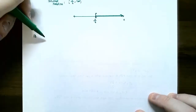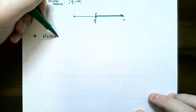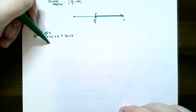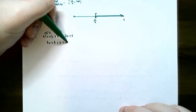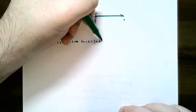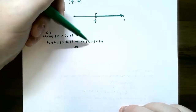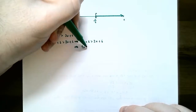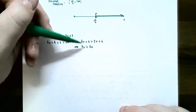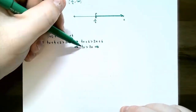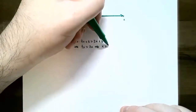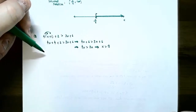Number three: 4(x + 1) + 2 > 3x + 6. Distribute to remove parentheses: 4x + 4 + 2 > 3x + 6. Combine like terms on the same side: 4x + 6 > 3x + 6. Subtract 6 from both sides: 4x > 3x. Don't divide yet — move all like terms to the same side first. Subtract 3x: x > 0. So the solution set is any x value greater than zero.